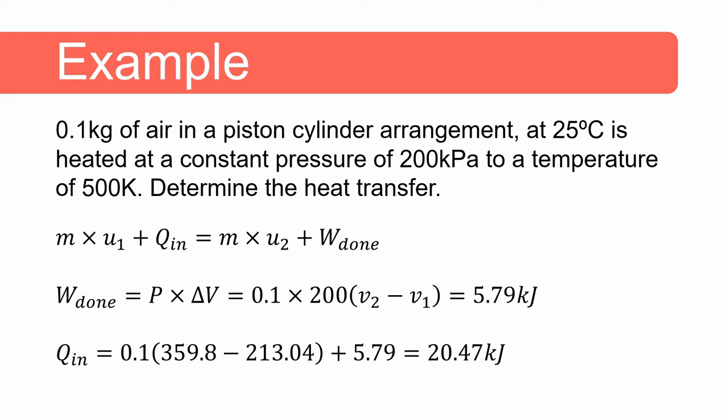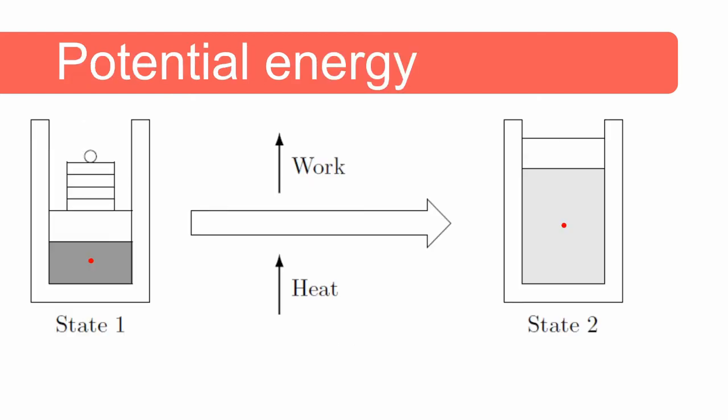In general we also need to consider potential and kinetic energy of the control mass. Usually they are small in comparison with the other terms in the first law, and we will illustrate this with a few examples. Starting with potential energy: the center of gravity of the control mass is indicated as a red dot. In the expansion process, the volume increases and the center of gravity also rises, as shown by the red dot.